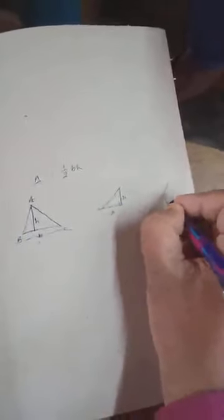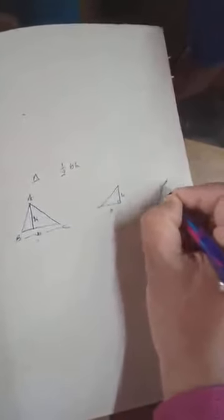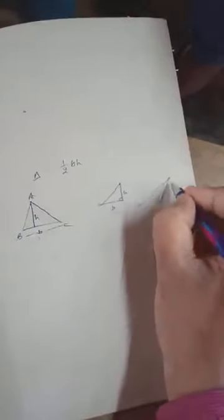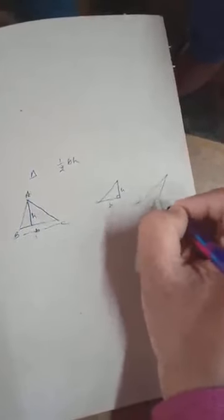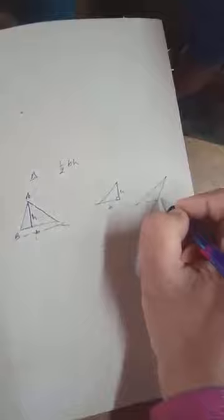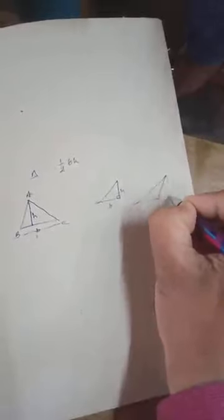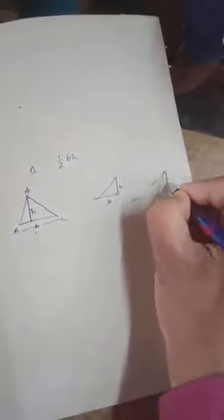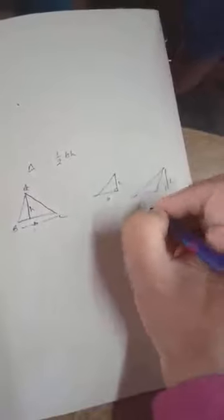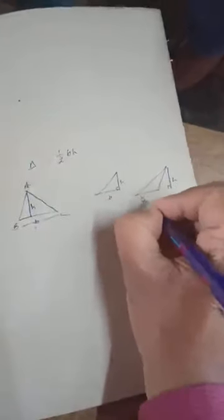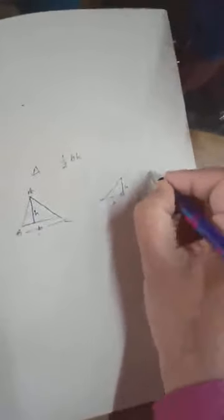For an obtuse triangle, to find the altitude we may need to extend the base outside the triangle and draw the perpendicular from the opposite vertex. Even then, the formula remains: area equals half times base B times altitude H.